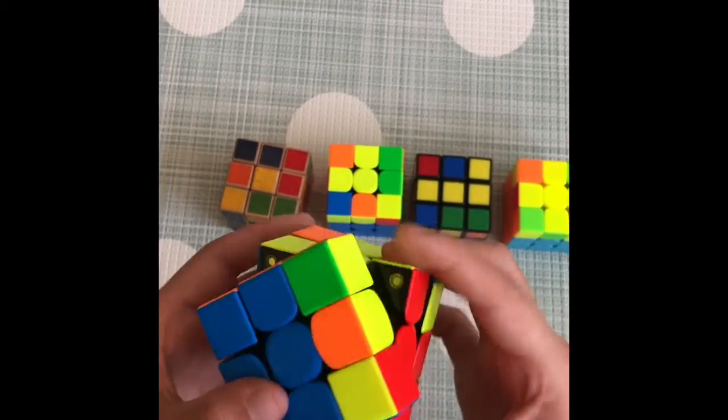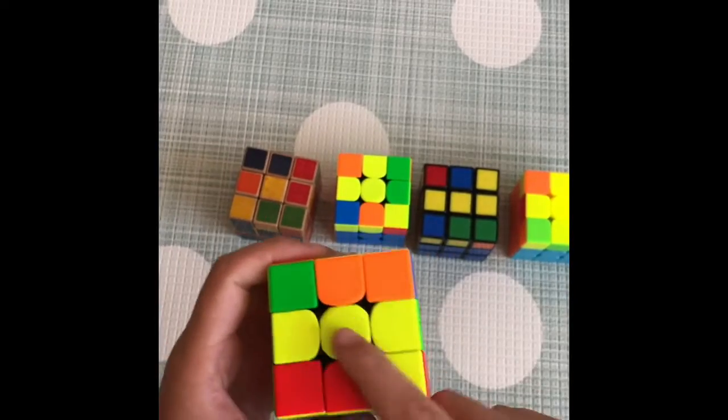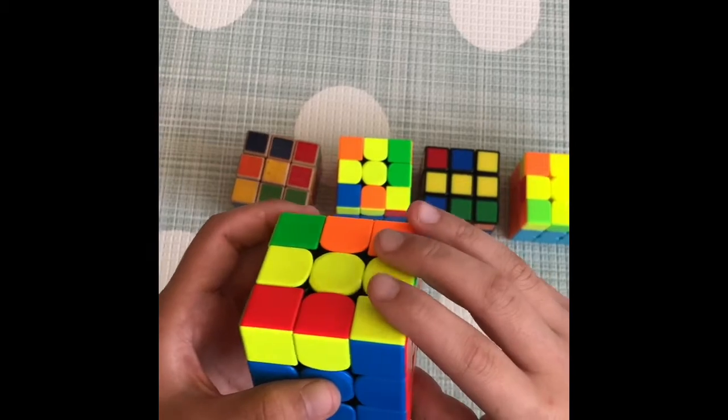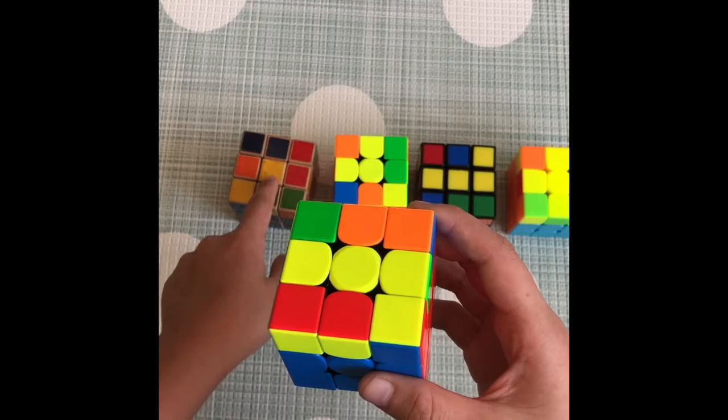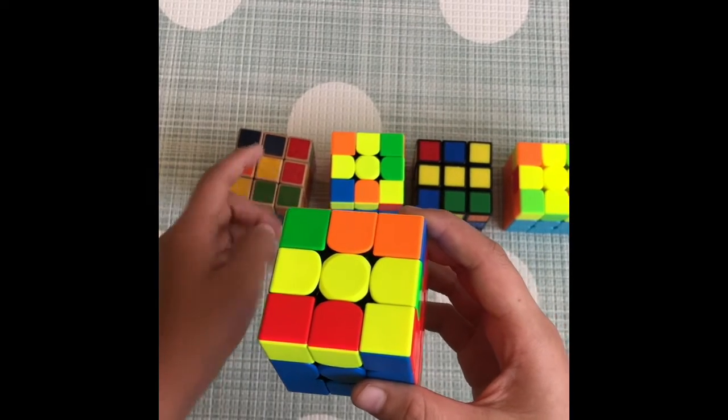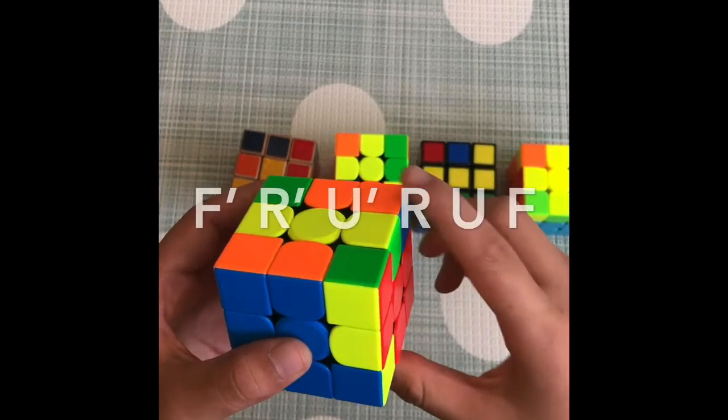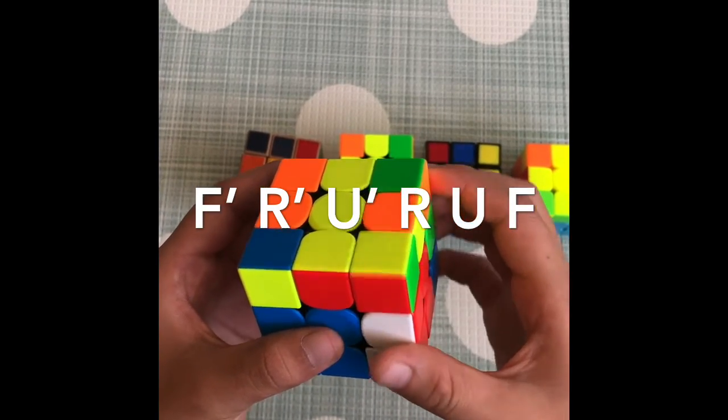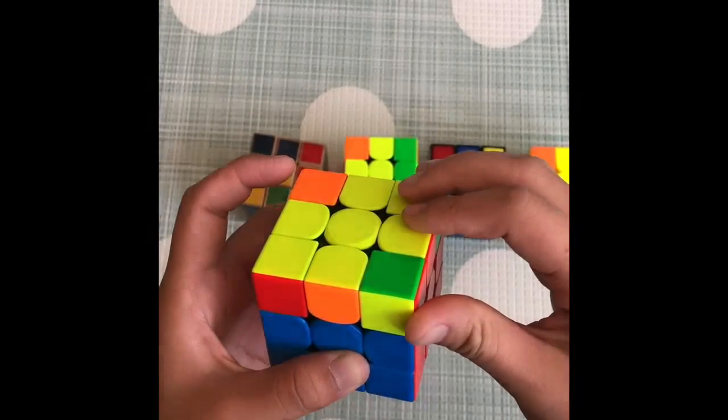So you do F inverted, R inverted, U inverted, R, U, F. That is basically going to get you this yellow cross.